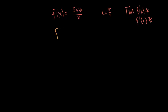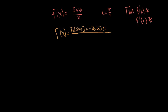So we could say that f prime of x is equal to — quotient rule, you're going to have a big fraction bar. It's the derivative of the top function, sine x, times the bottom function, which is just x, minus the derivative of the bottom function, which is just x, times the top function, which is sine x, over the bottom function squared.